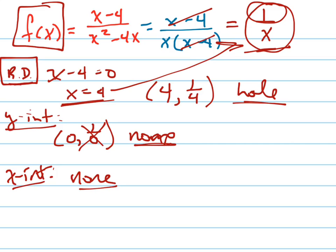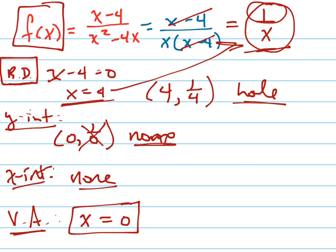The next step is to find my vertical asymptotes. My vertical asymptote is found by setting the denominator equal to 0, which is just x, so x equals 0 is my vertical asymptote. My horizontal asymptote has to do with the degrees of the numerator and denominator. The degree of the top is 1 and the degree of the bottom is 2. Since the degree of the top is less than the degree of the bottom, y equals 0 is my horizontal asymptote.